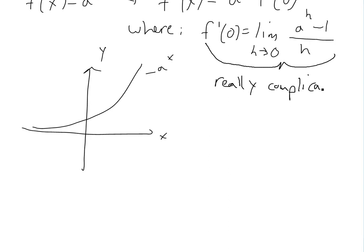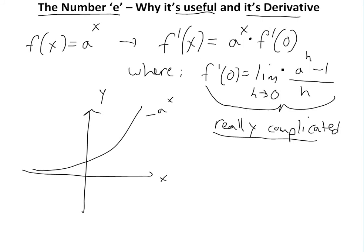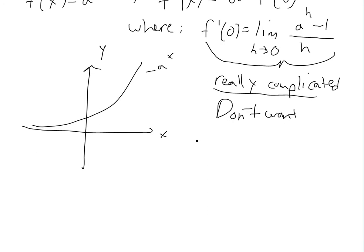And if we were to use it in real world applications, like population growth and whatnot, we don't want to be calculating this. So basically, Euler, Leonard Euler, from 1727, came up and he basically came up with the number, it was used credit for the number e.